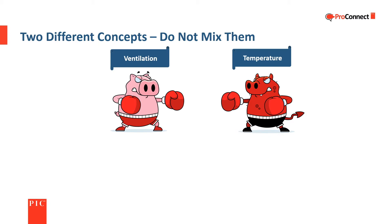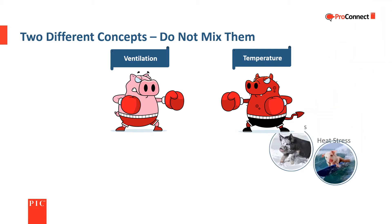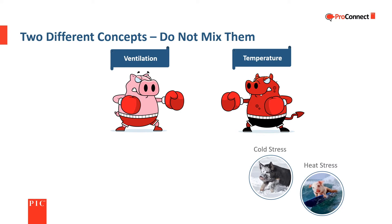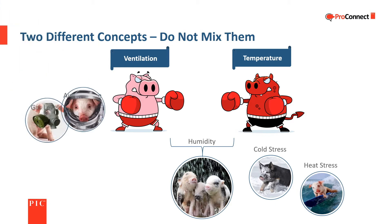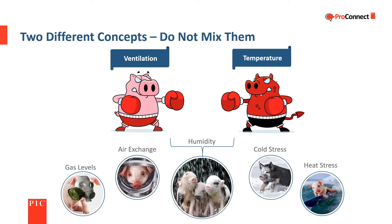Temperature is important since both heat and cold stress have a negative effect on average daily gain and feed conversion. Humidity changes the thermal sensation and can influence the level of bacteria and virus challenges present. Ventilation focuses on using air exchange to control the level of gases and humidity, and can impact temperature but needs to be adequate no matter what the temperature is.